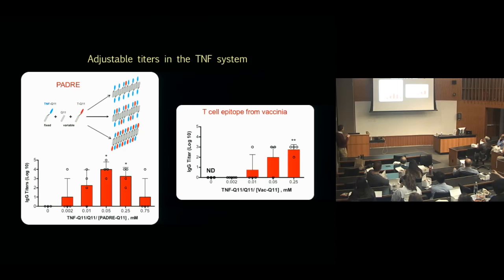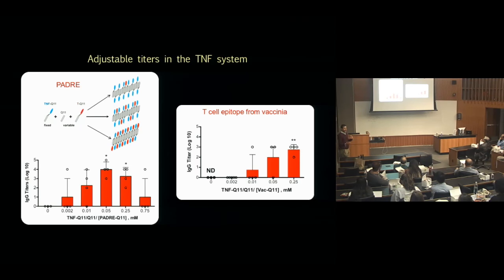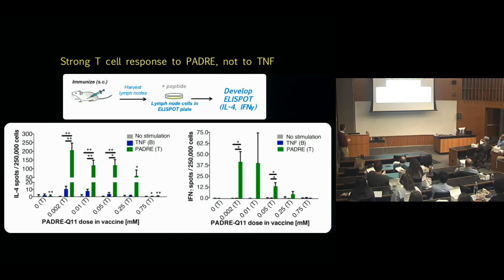Back to the TNF story: we did this in the TNF situation and again got this optimization curve when adding more and more PADRE epitope, so we could pick the best and most reliable titers. As an aside, we've looked at other exogenous T-cell epitopes including one from vaccinia — different T-cell epitopes have different shapes of that curve. This empirical approach is valuable because for a given combination of epitopes, we can find which gives the response best suited to what we're interested in.